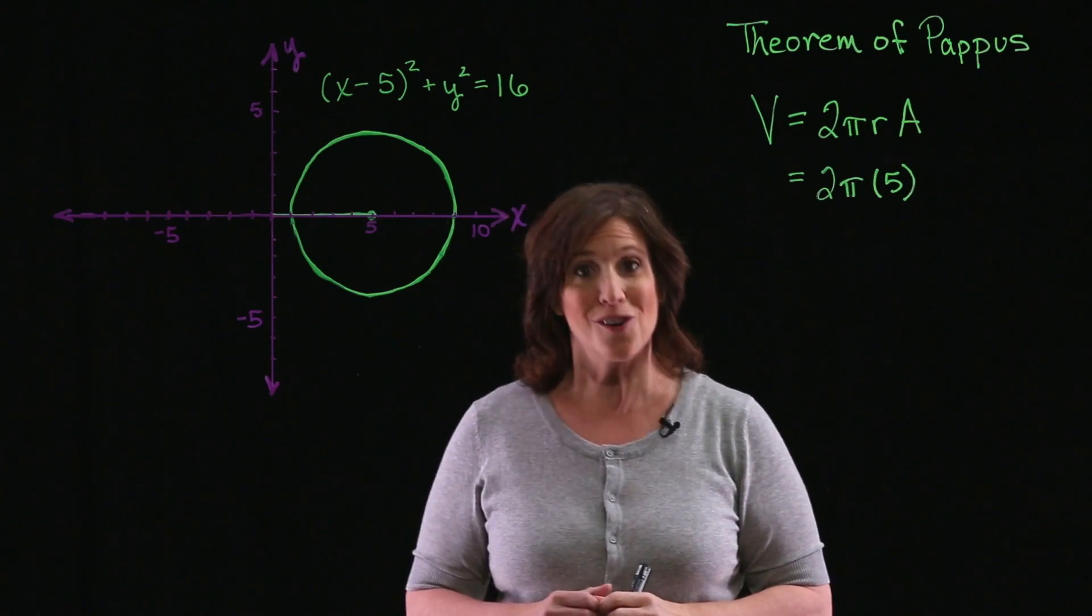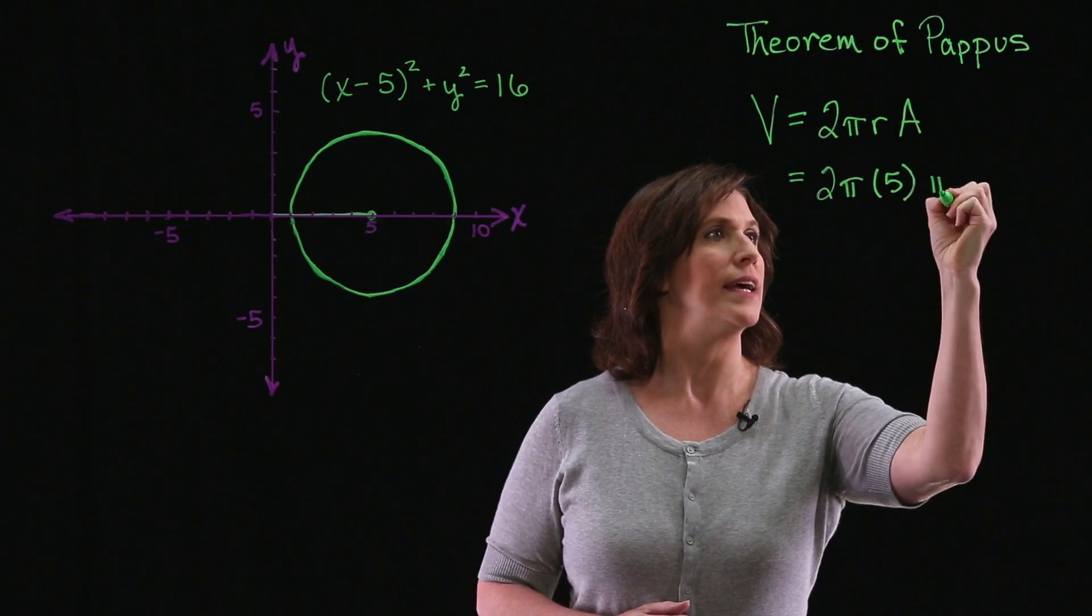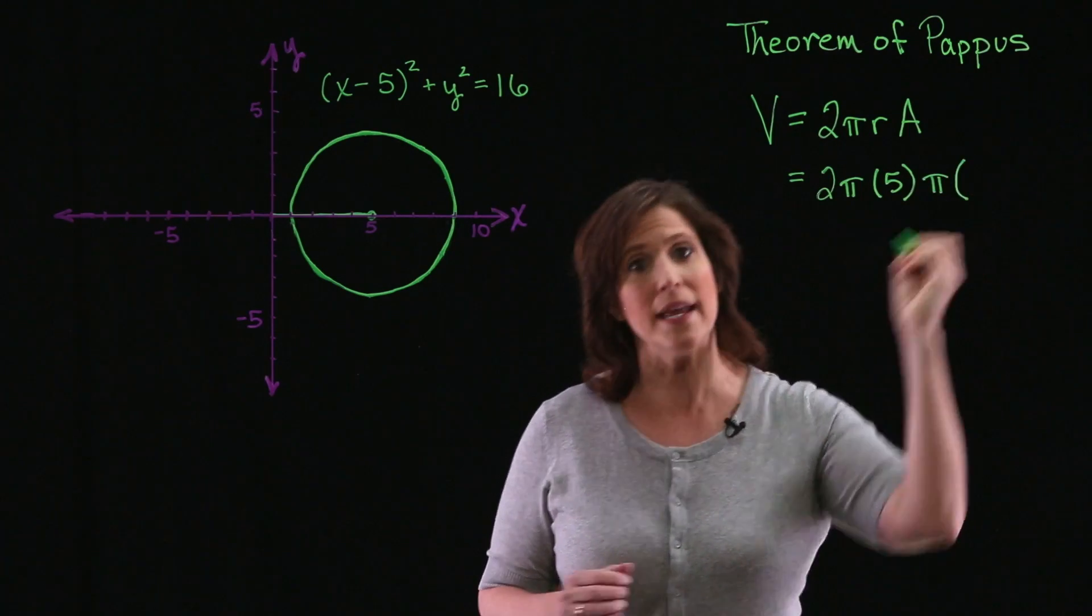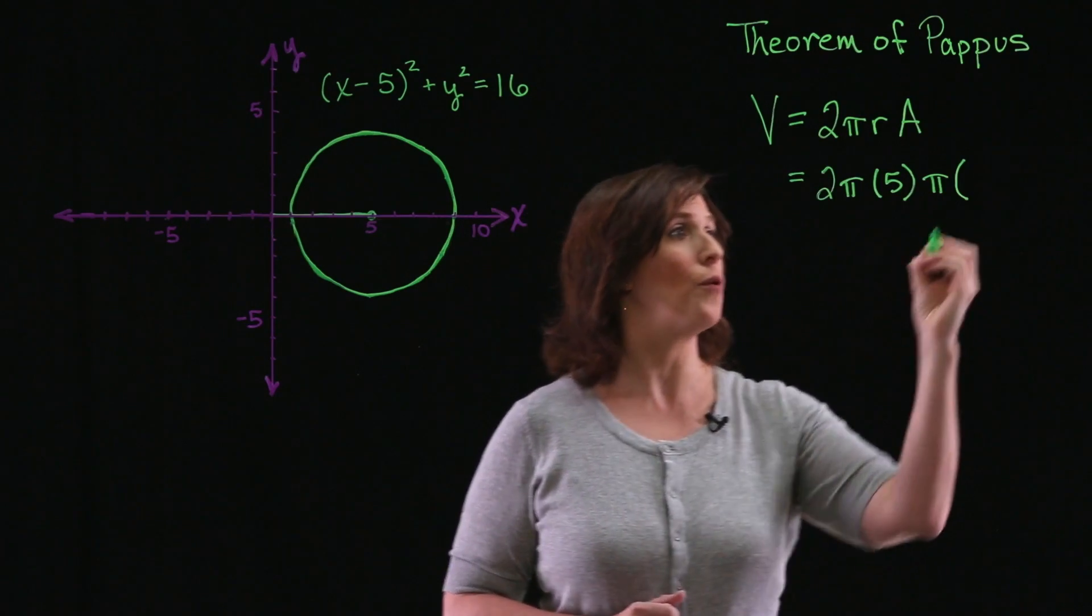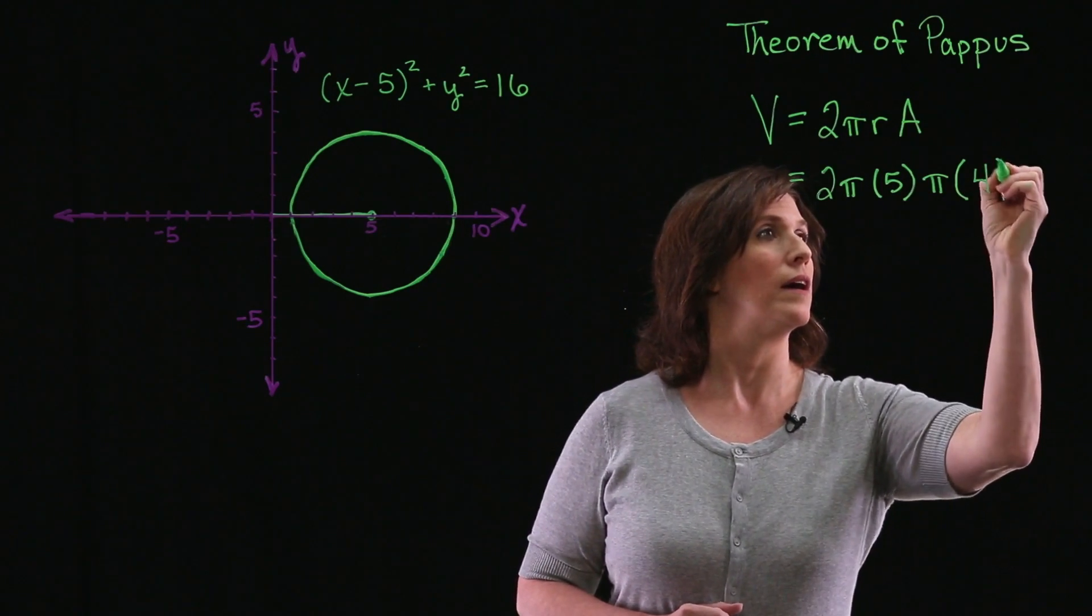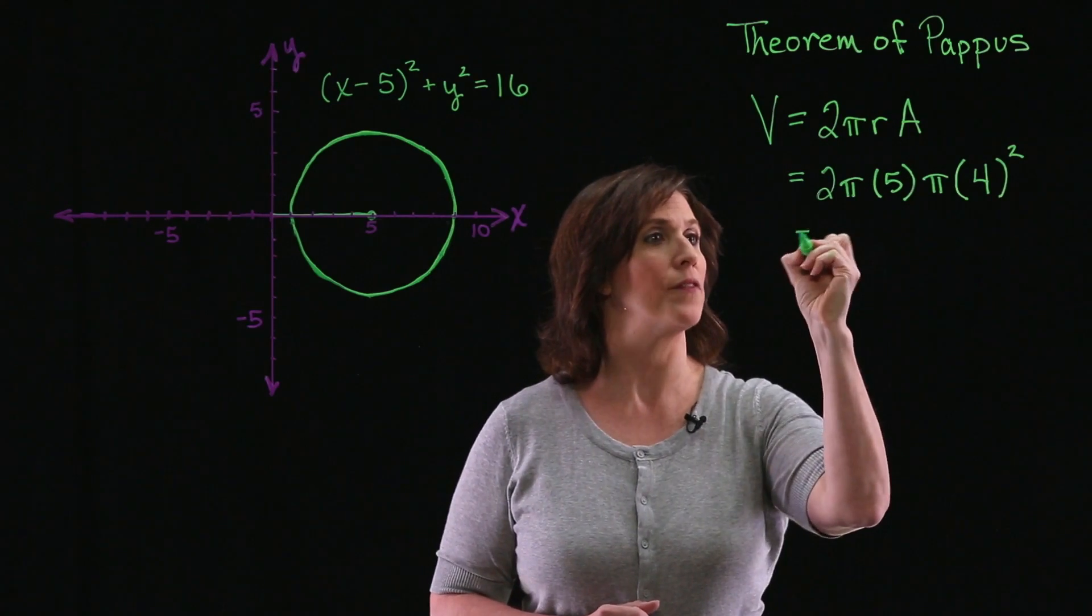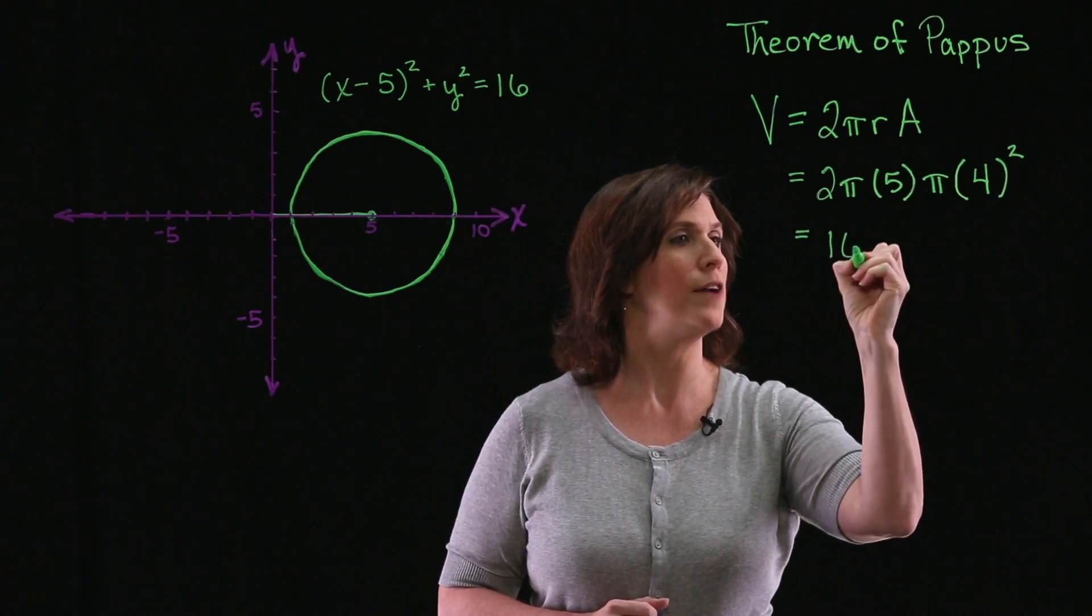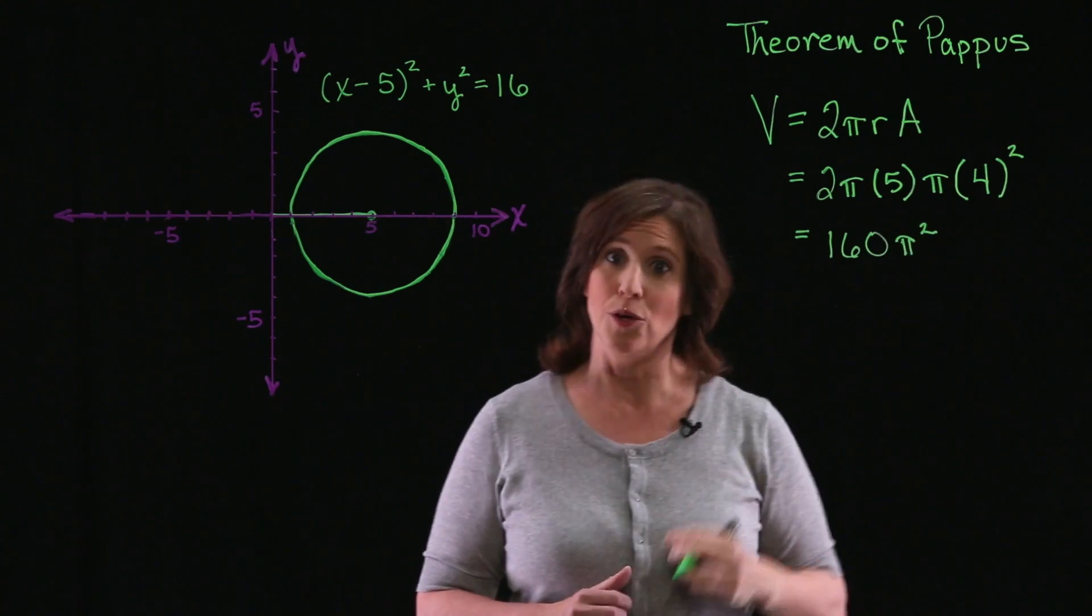Now, the region is a circle. We have a geometry formula for that. The area of a circle is π times the radius of the circle squared. The radius of this particular circle is 4. And now with a little arithmetic, we find out that the volume is 160π² units cubed, because we're measuring volume.